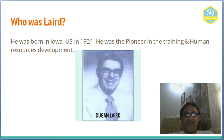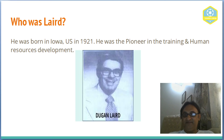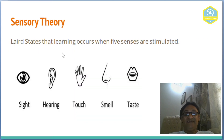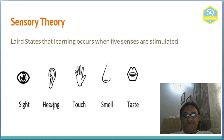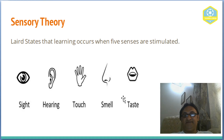Laird states that learning occurs when the five senses are stimulated. What are the five senses? You can see them here: sight, hearing, touch, smell, and taste. These five senses play an important role in learning.